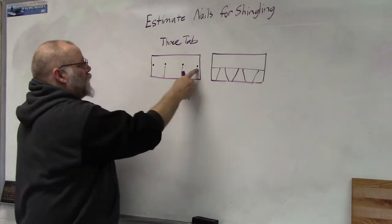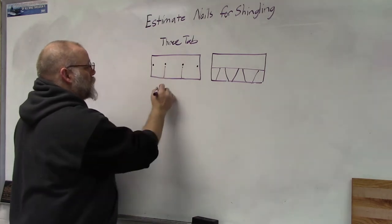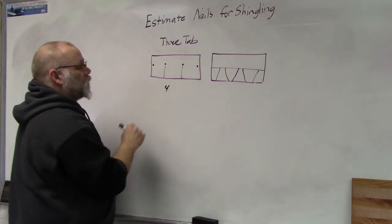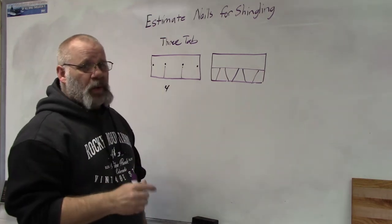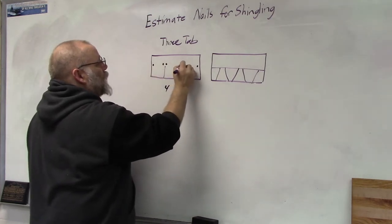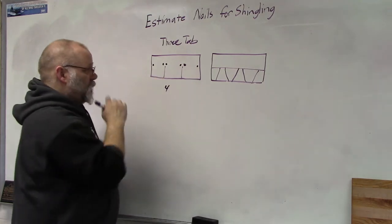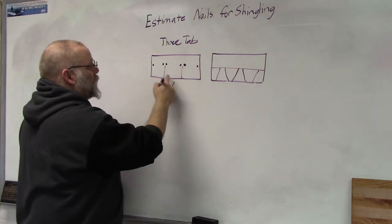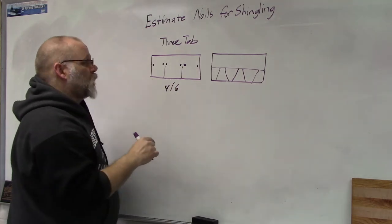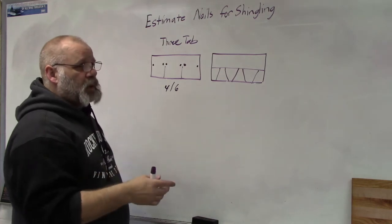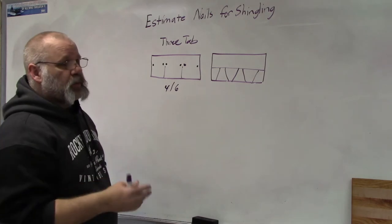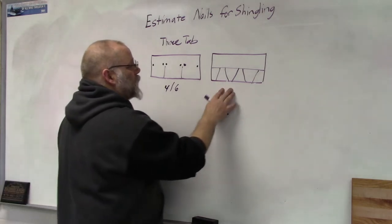One on each end and one above each of the tab slits. Okay, now if you're in a high wind area, then they recommend that you put one nail on each side of the slit, so that would give you a total of six nails per shingle. So again, whether you're in high wind or not, you're going to use either four or six nails per shingle.